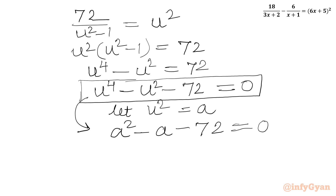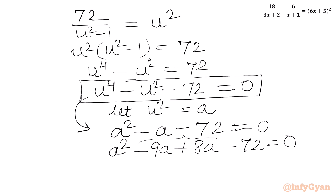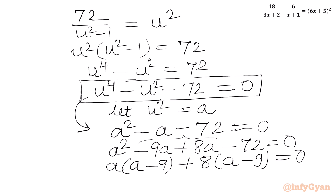Now this is a quadratic and we can use factorization. We write minus a as minus 9a plus 8a, so the equation becomes a² − 9a + 8a − 72 = 0. From the first two terms, a is common giving a(a − 9). From the last two terms, 8 is common giving 8(a − 9).